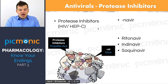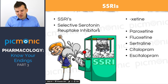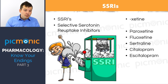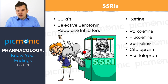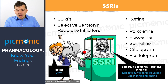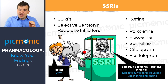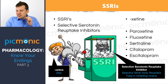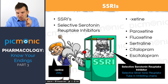Now let's get into some psych medications. The first are SSRIs — selective serotonin reuptake inhibitors. Many of them end in -etine, like paroxetine and fluoxetine, which are the classic ones. We also have sertraline, citalopram, and escitalopram. SSRIs are really important — you're most likely to get questions on these.